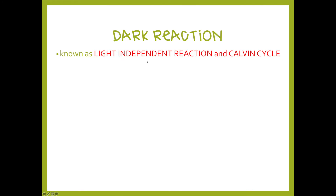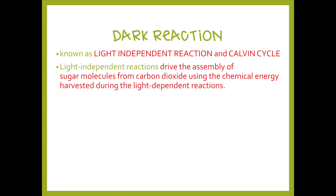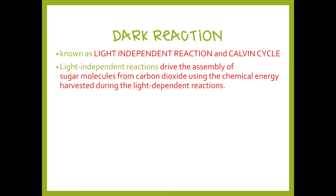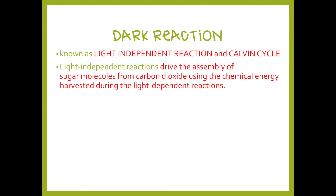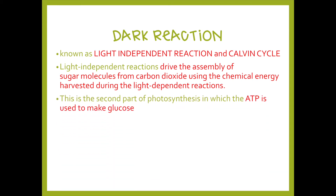The next reaction is the dark reaction — the opposite of the light reaction, meaning it does not need light; it is light-independent. It is also known as the Calvin cycle. You need to know all three names because they are used interchangeably throughout biology. In this reaction, glucose or sugar is made: the plant takes carbon dioxide and the ATP from the last reaction to create that glucose molecule.